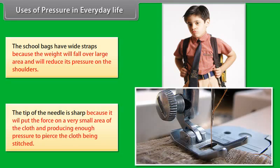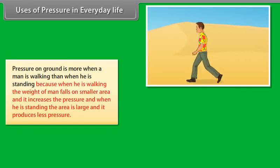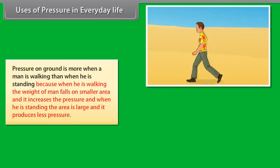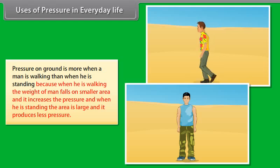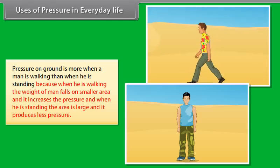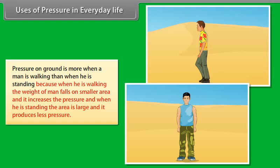The tip of a needle is sharp because it puts force on a very small area of the cloth, producing enough pressure to pierce it. Pressure on the ground is more when a man is walking than when standing, because while walking the weight falls on a smaller area, increasing pressure; while standing the area is larger, producing less pressure.